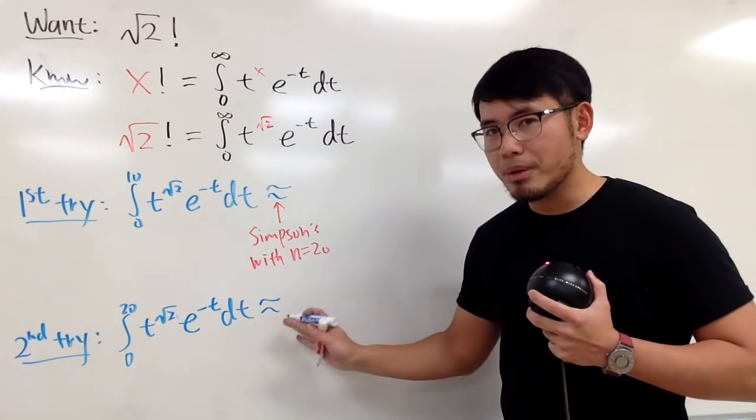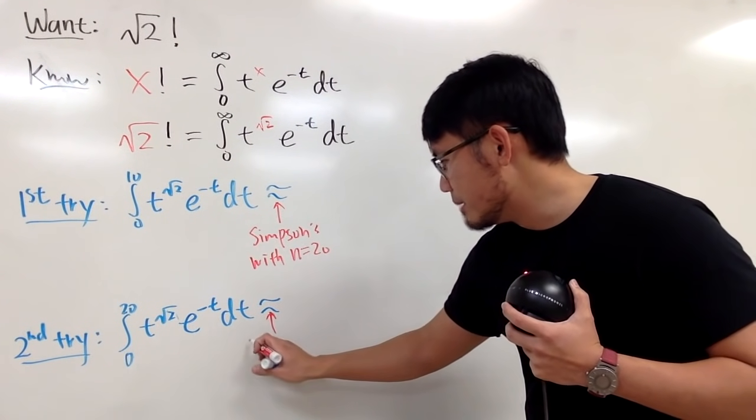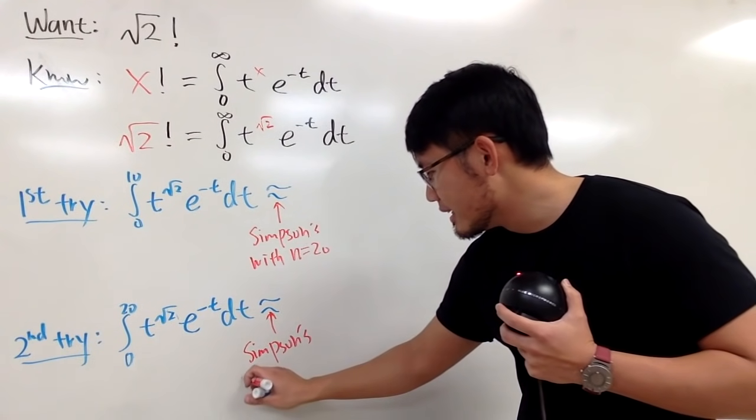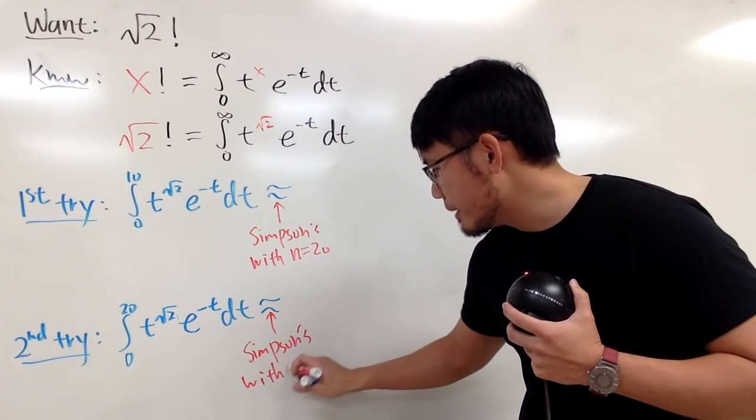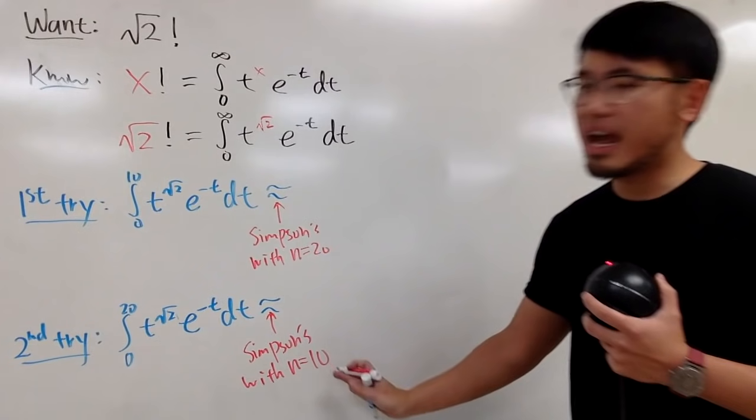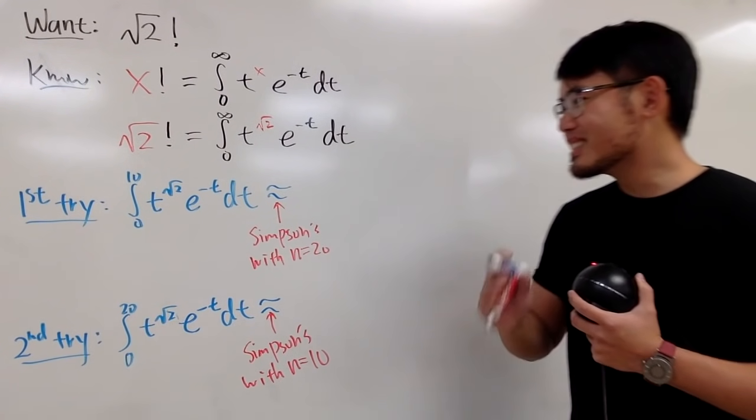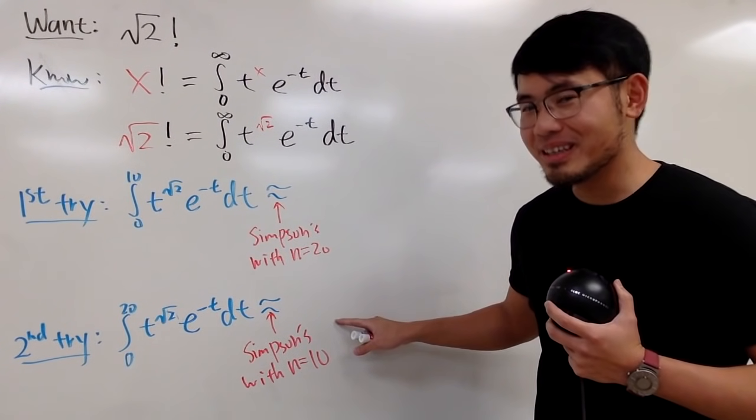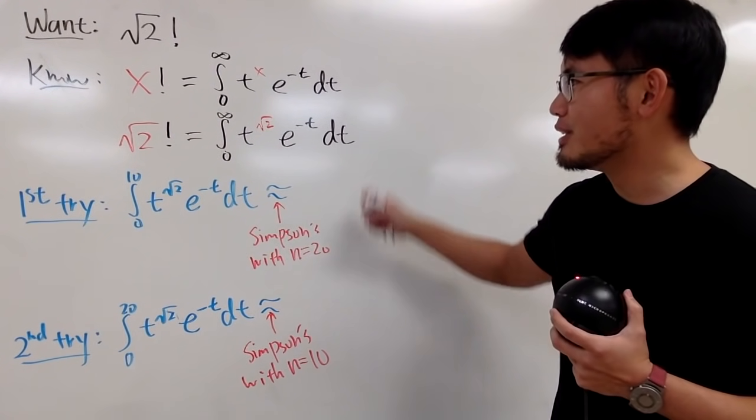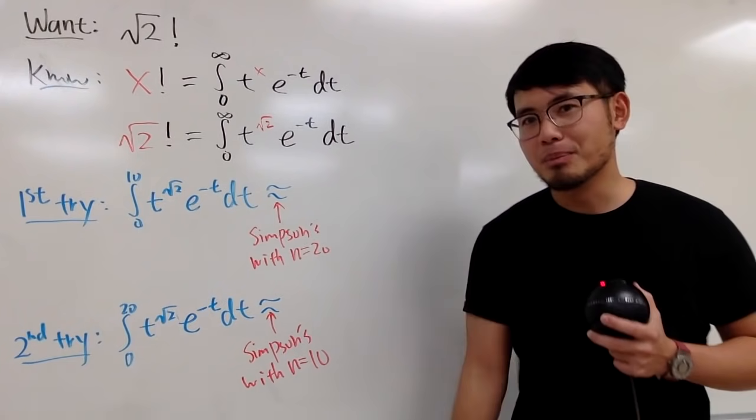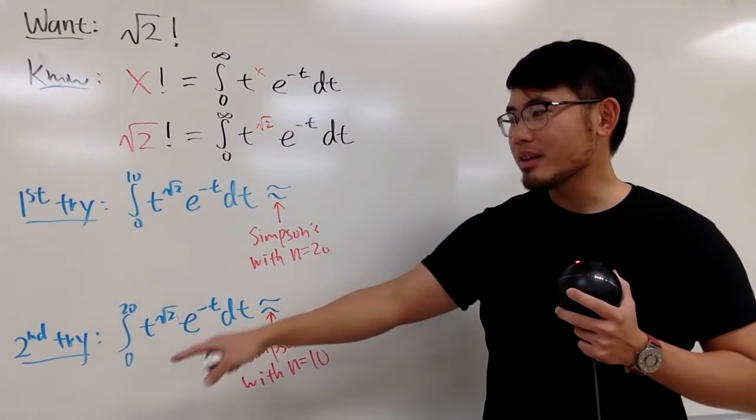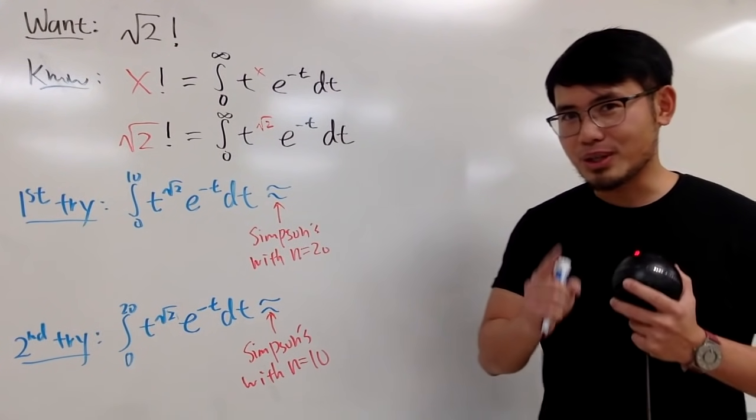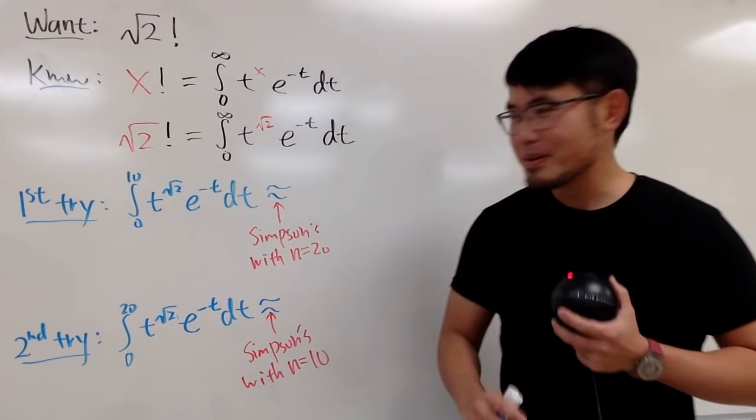But, anyway, the trade-off that I will make right here is that I will still use the Simpson's rule just to be fair. But, this time, I will just pick n to be 10. So, my question for you guys is that which one right here do you think is actually a better approximation to this? Leave a comment down below and let me know. Is it the first one or the second one? Go ahead, comment down below. I trust you guys.